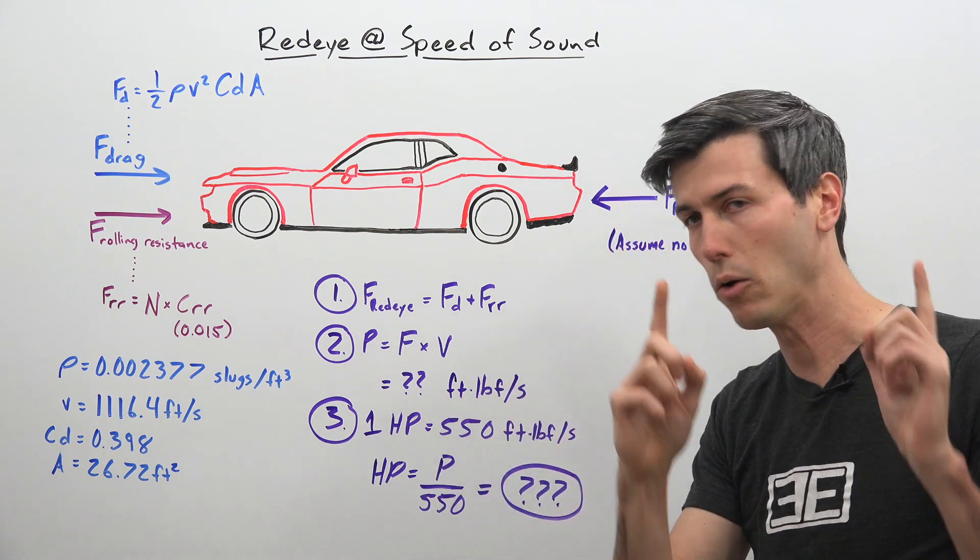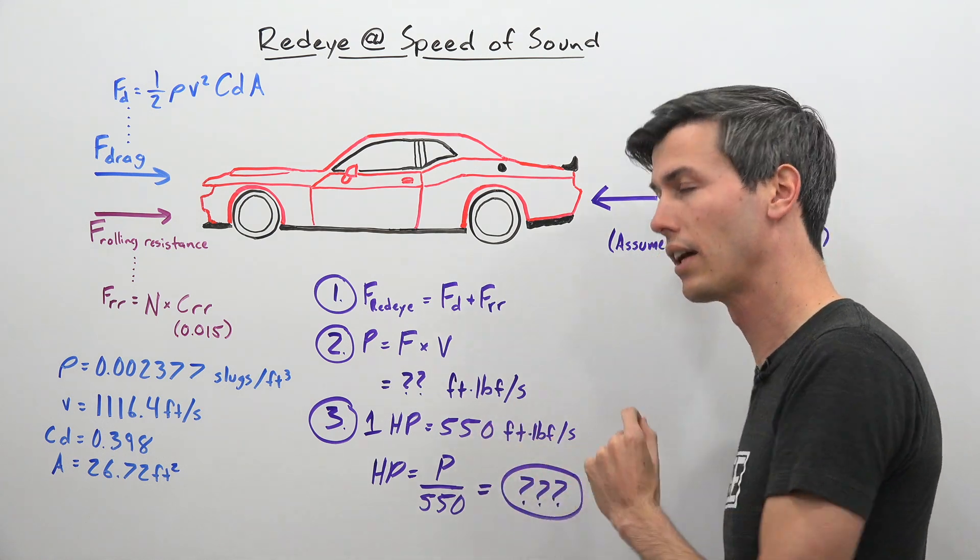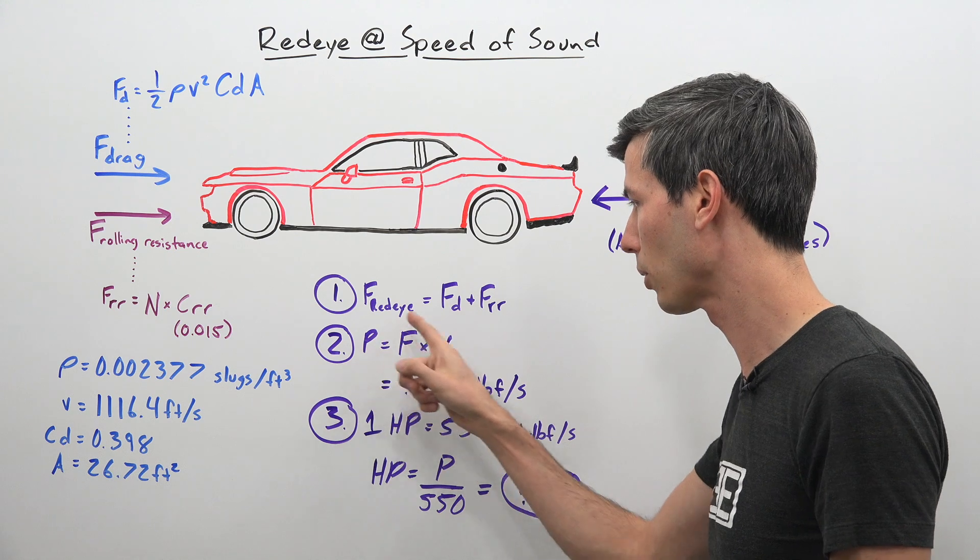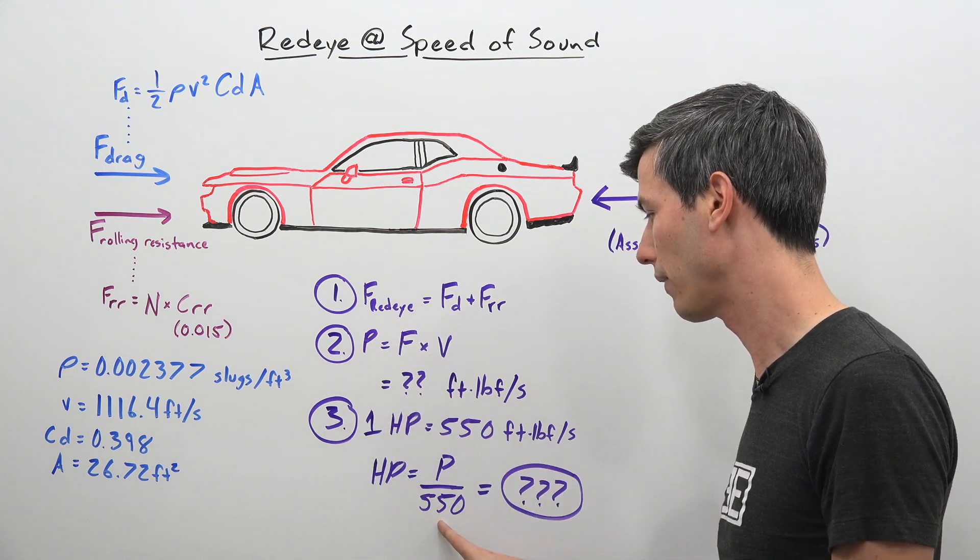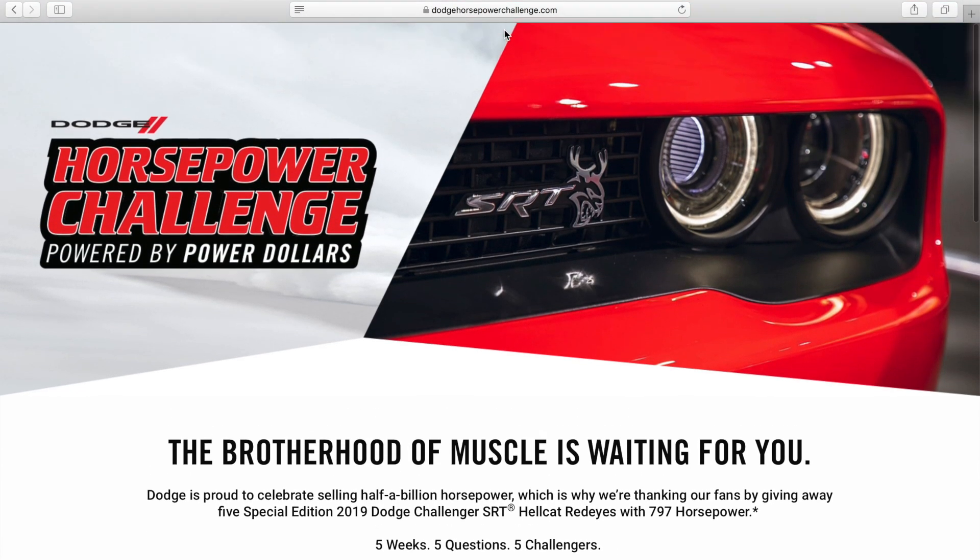Now one horsepower is equal to 550 foot-pounds force per second. So what we do is we take the power number we just calculated, we divide that by 550, and that gives you your answer. So good luck to you all and go to DodgeHorsepowerChallenge.com to submit your answer.